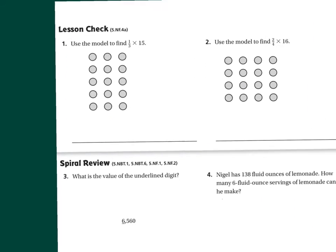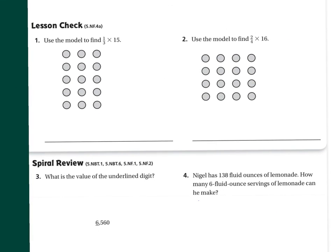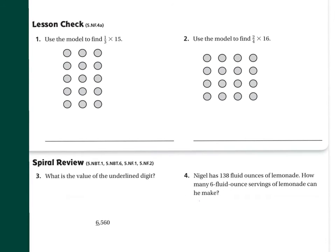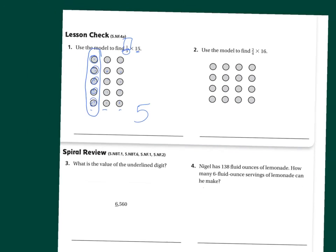Let's look at this model right here. It says use the model to find one-third of fifteen. As you can see, they've already drawn three groups and counted to fifteen. Now we need to circle just one of those groups. How many is in that one group? One, two, three, four, five. So your answer is five. One-third times fifteen is five. A little bit confusing, I know.